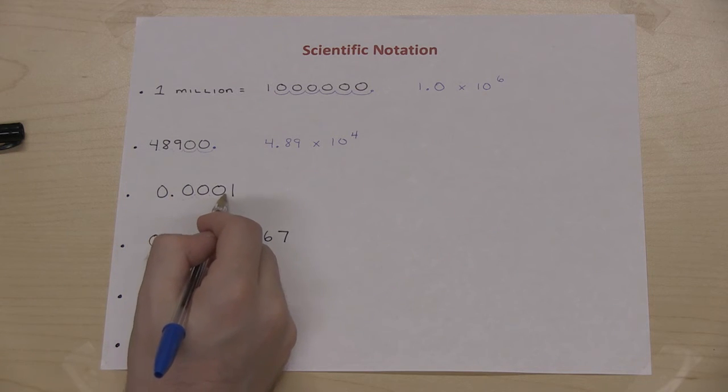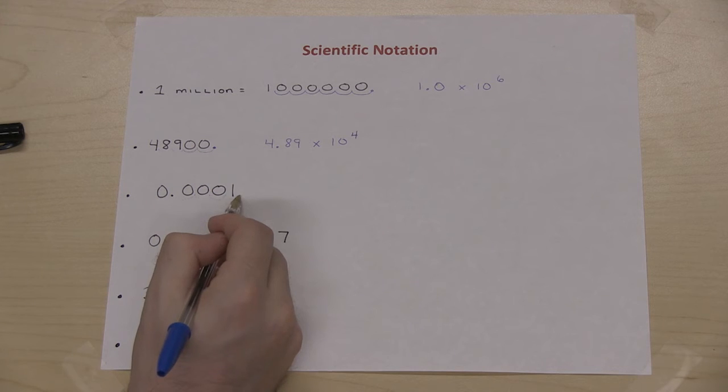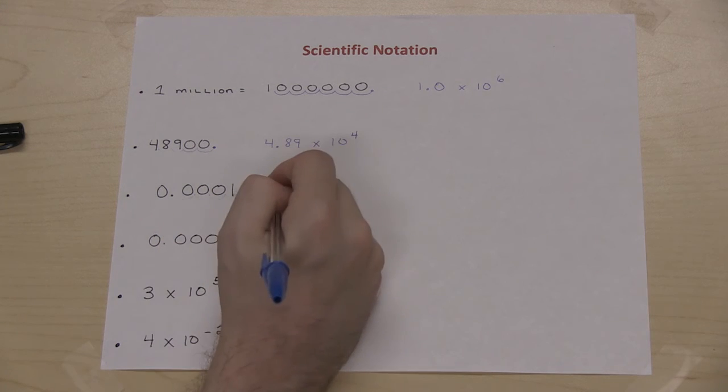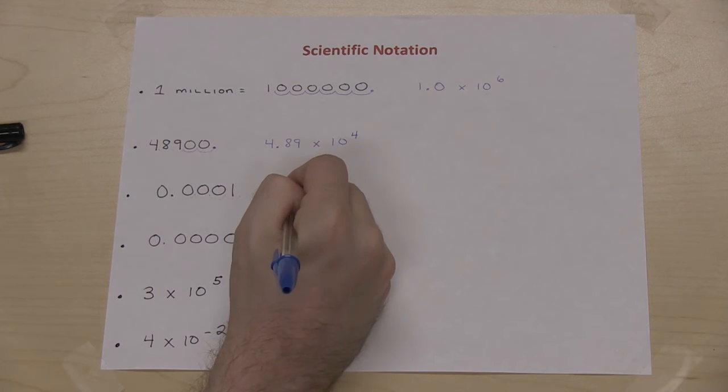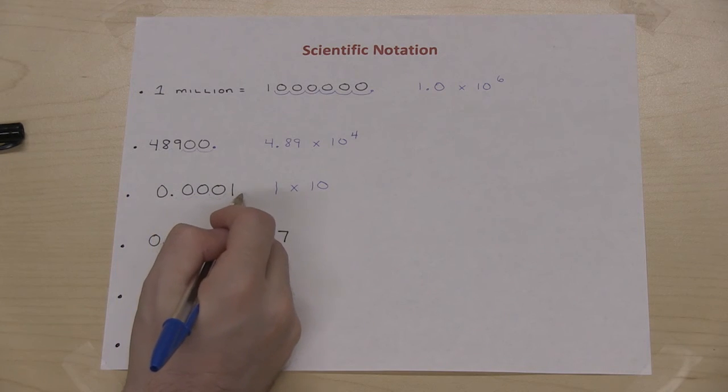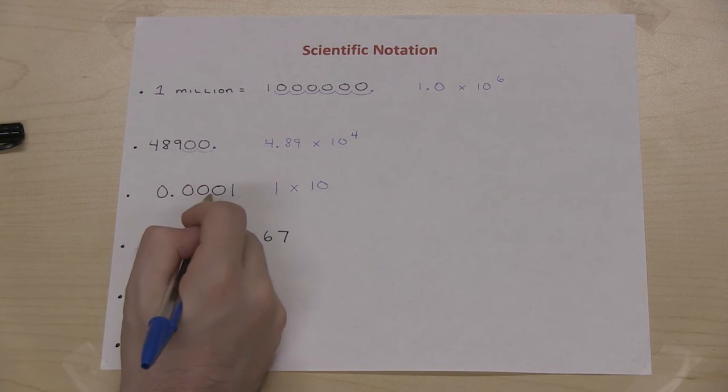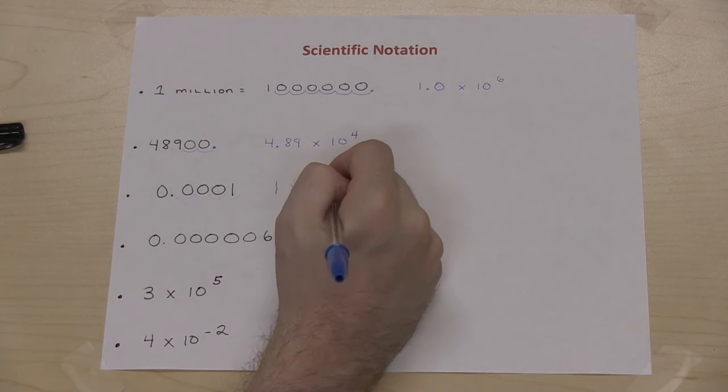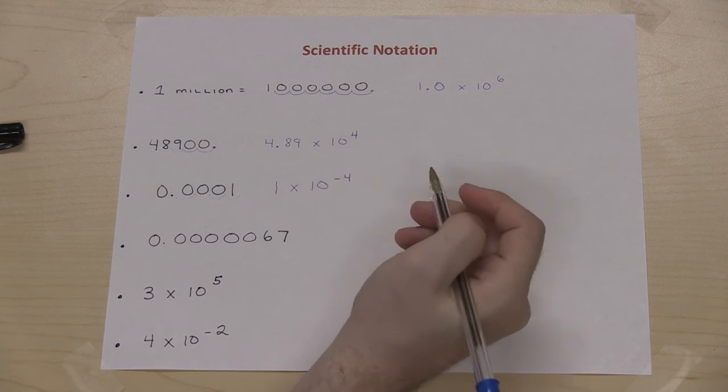1, 2, 3, 4. Now that gets me to 1. So I'll have 1 times 10, and now because I moved to the right, 1, 2, 3, 4, it will be 1 times 10 to the negative 4.